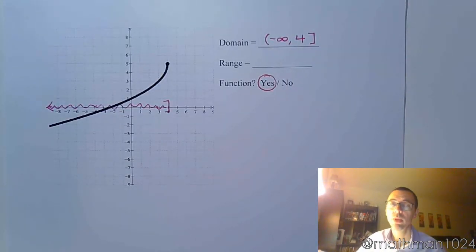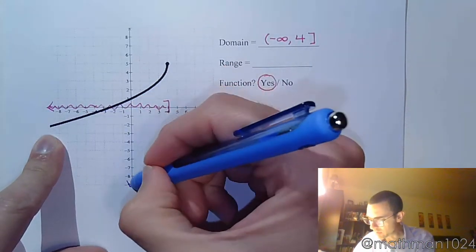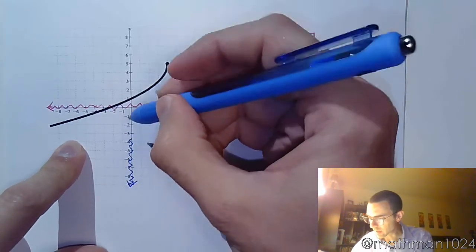And what about my range? Well, the range is from bottom to top. So this guy's going down. So it's coming from negative infinity. He gets going higher, higher,